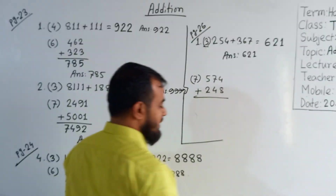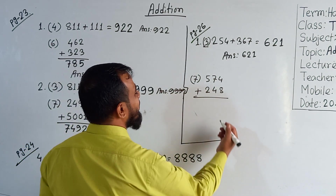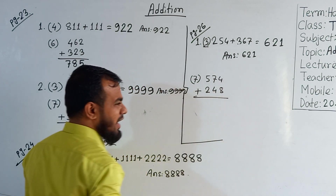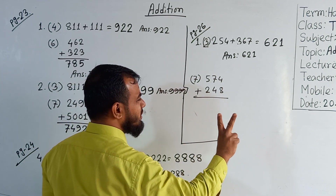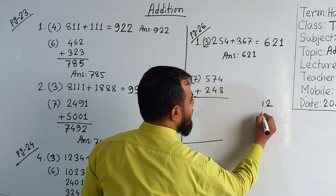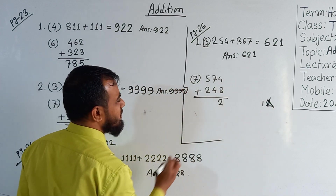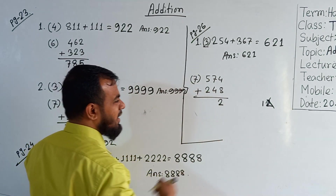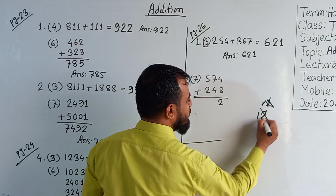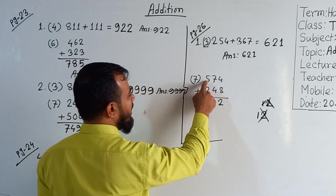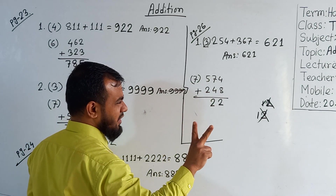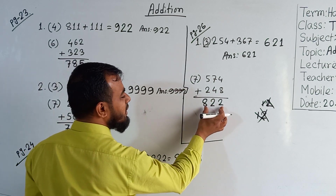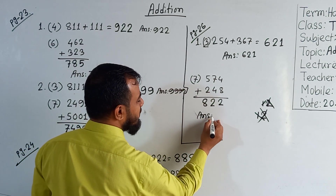The last sub-question number 7 is already in vertical form, so we can solve directly. From the right side: 8 plus 4 is 12 — write 2, carry 1. Then 7 plus 4 is 11, plus carry 1 makes 12 — write 2, carry 1. Then 5 plus 2 is 7, plus carry 1 makes 8. We write 8 directly. Our answer is 822.